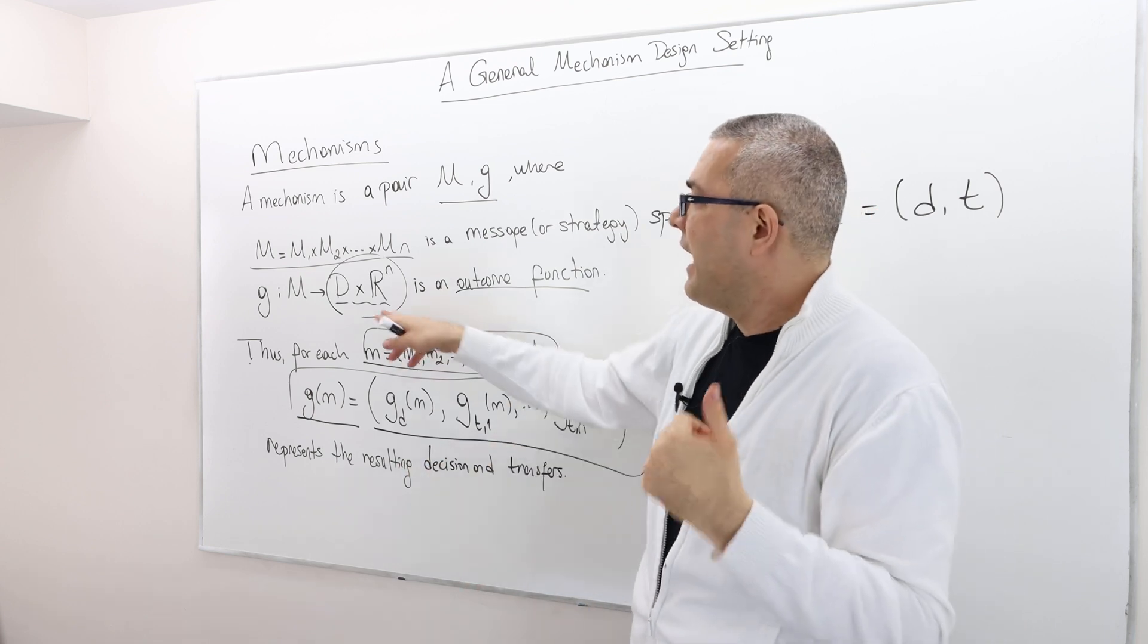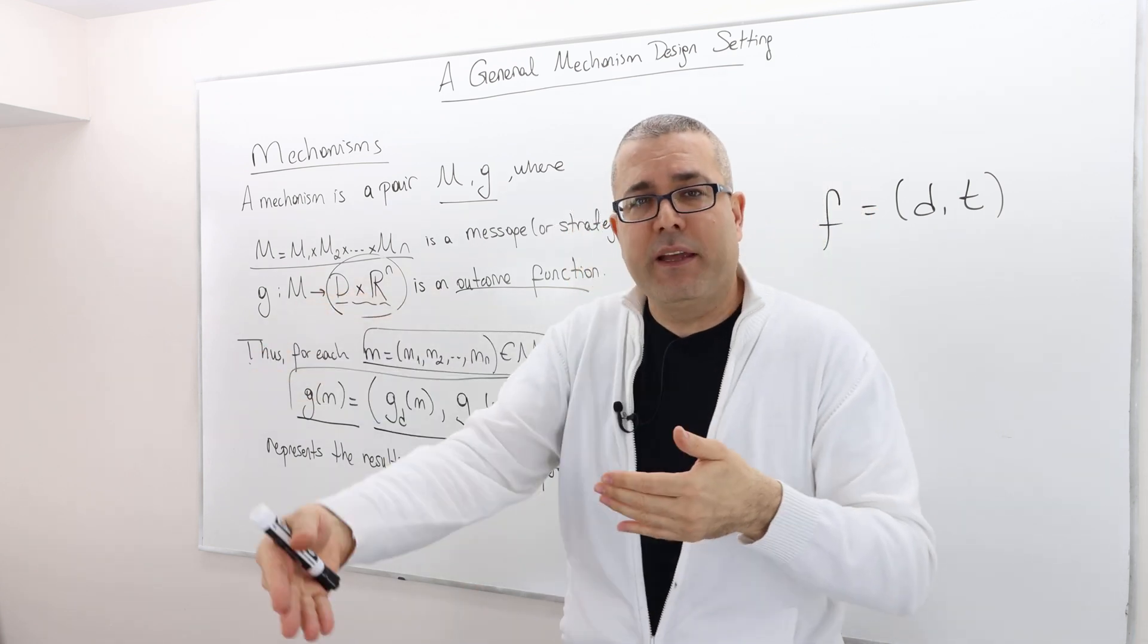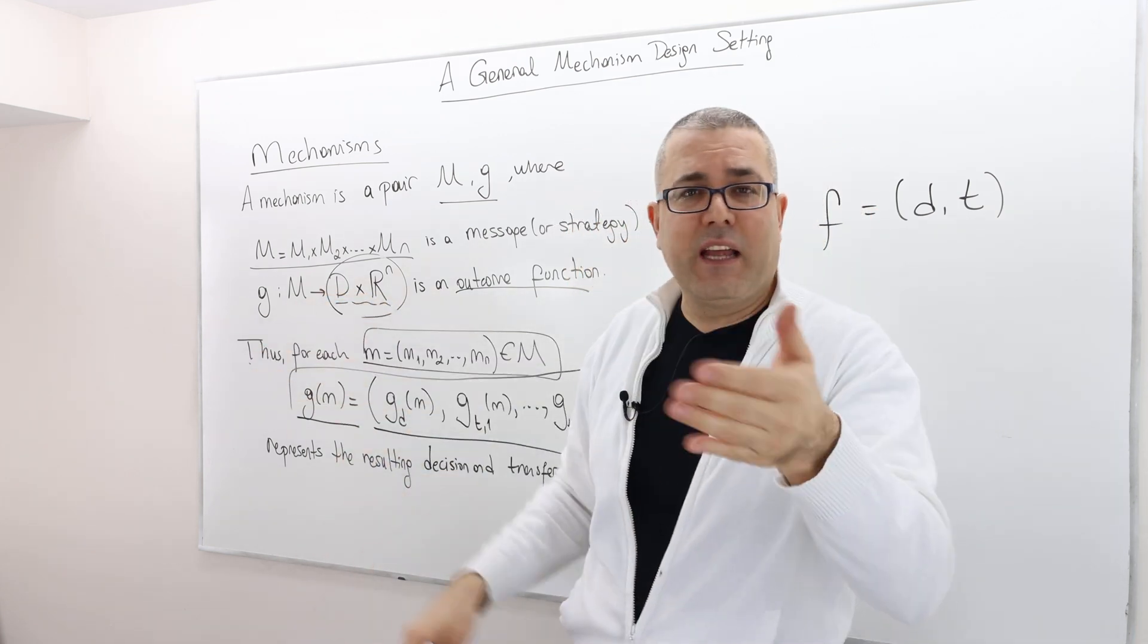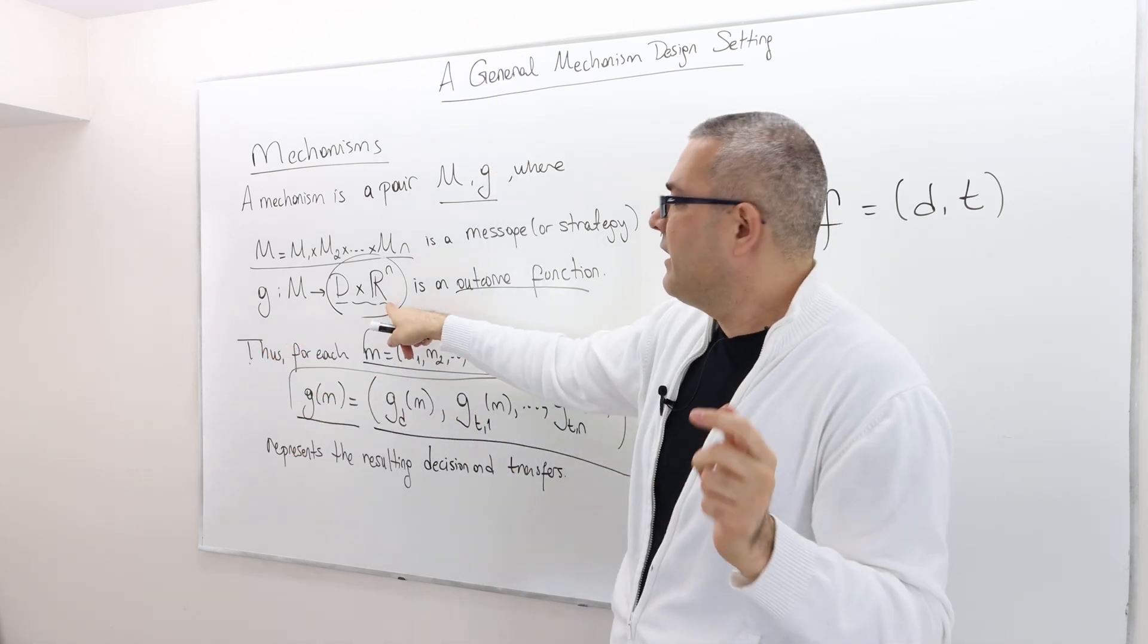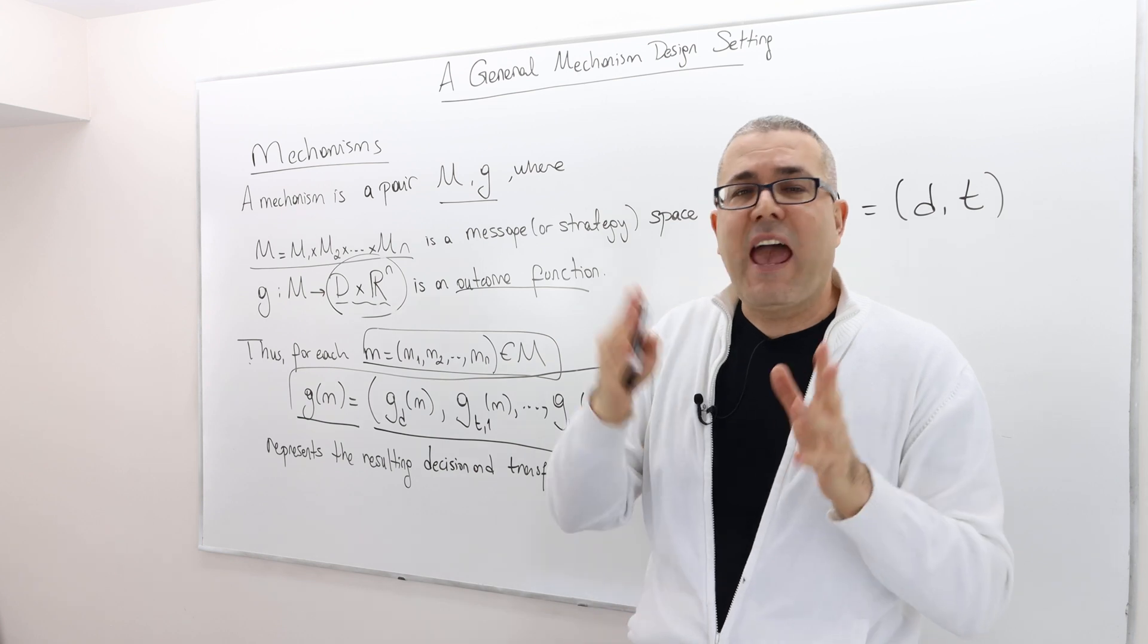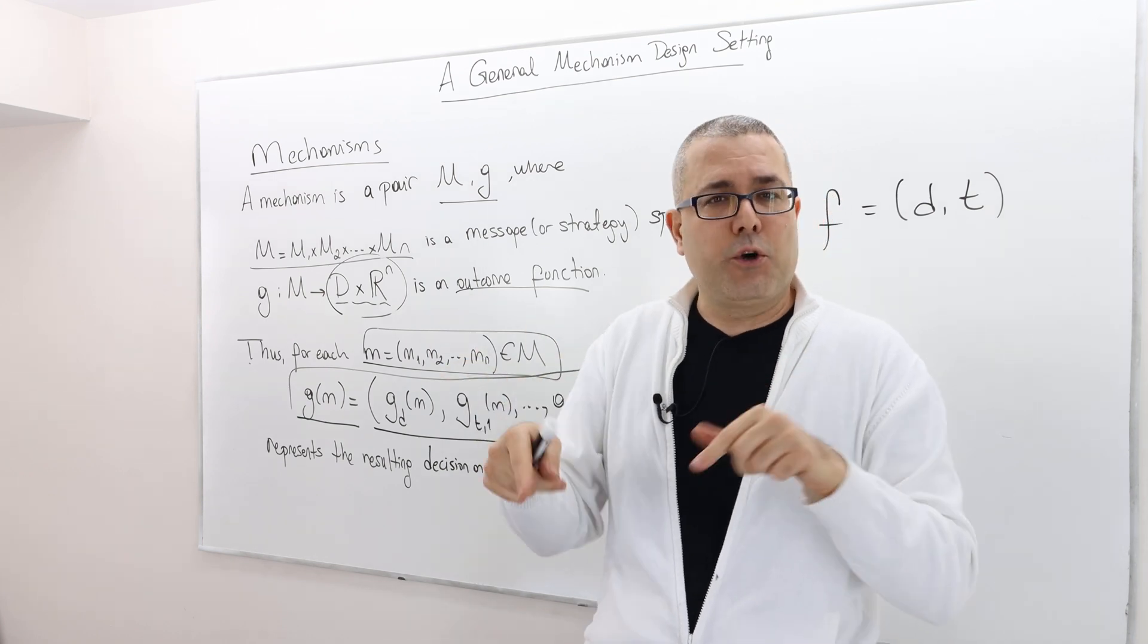In the all pay auctions, again, the messages are the bids and the decision function, again, very simple. Look at all the bids, the highest bidder wins. And then R^N is again, simple. Everybody pays his or her bid.